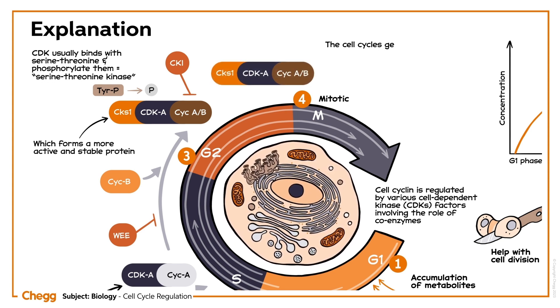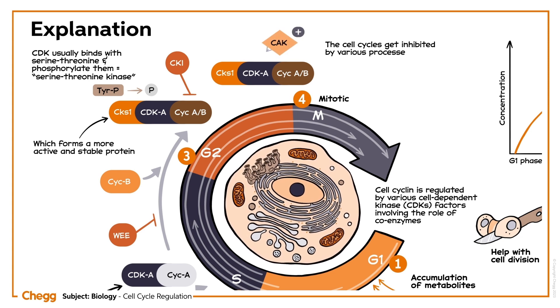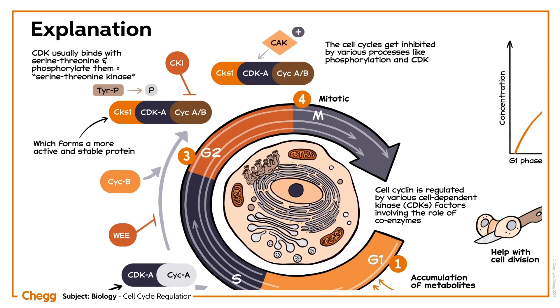The cell cycle gets inhibited by various processes, like phosphorylation and CDK inhibitors.